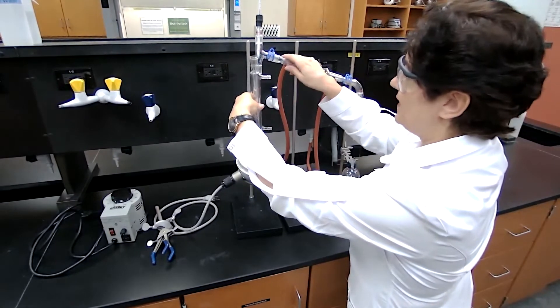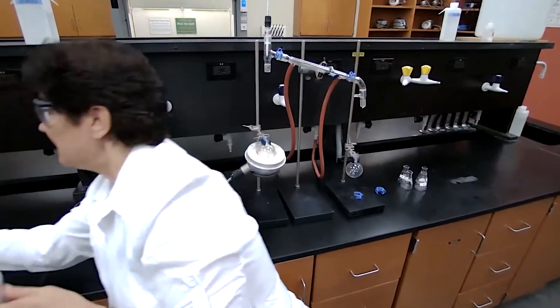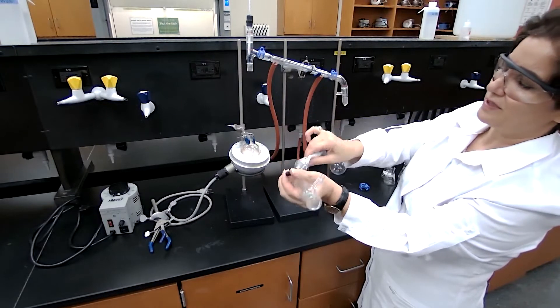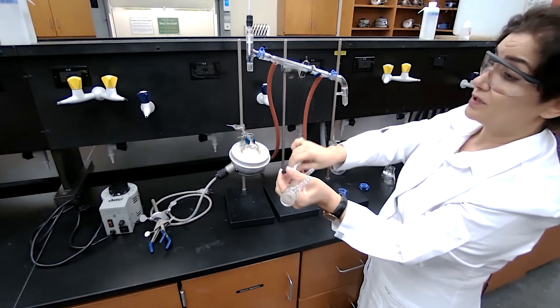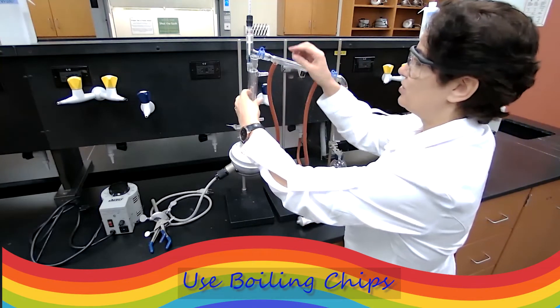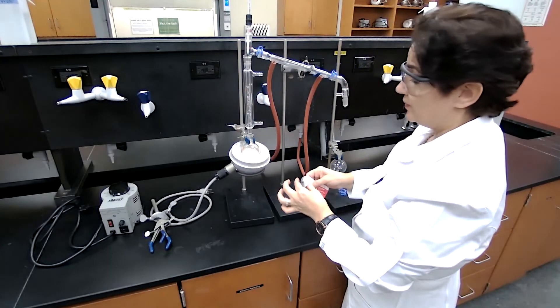Insert the fractionating column. Now don't forget to add the grease. Grease must be added to every glass joint for the same two reasons that we talked about in the other distillation setup. You want to make sure that your glass joints are always lightly greased.